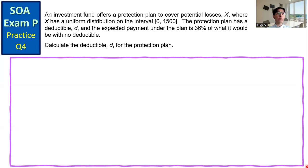SOA Exam P practice question number 4. An investment fund offers a protection plan to cover potential losses X, where X has a uniform distribution on the interval 0 to 1500.